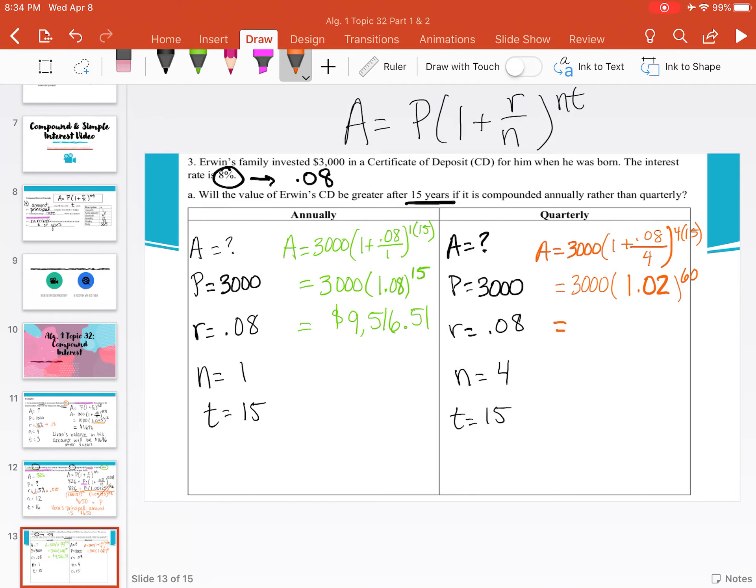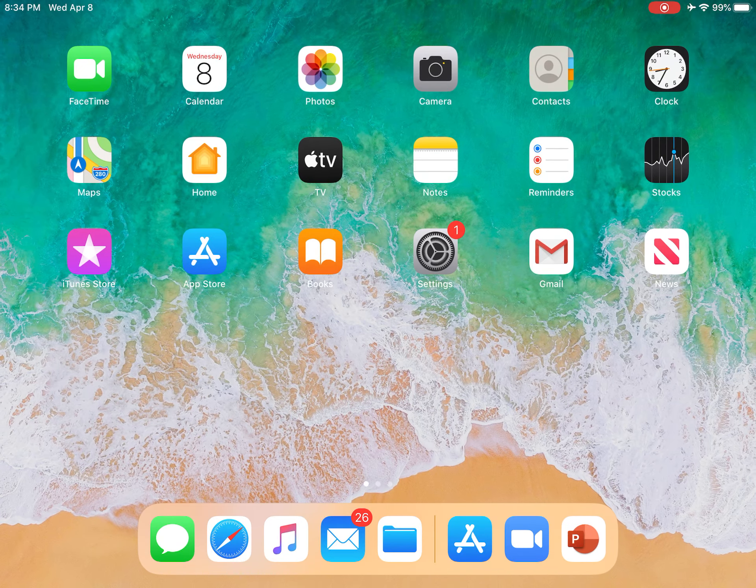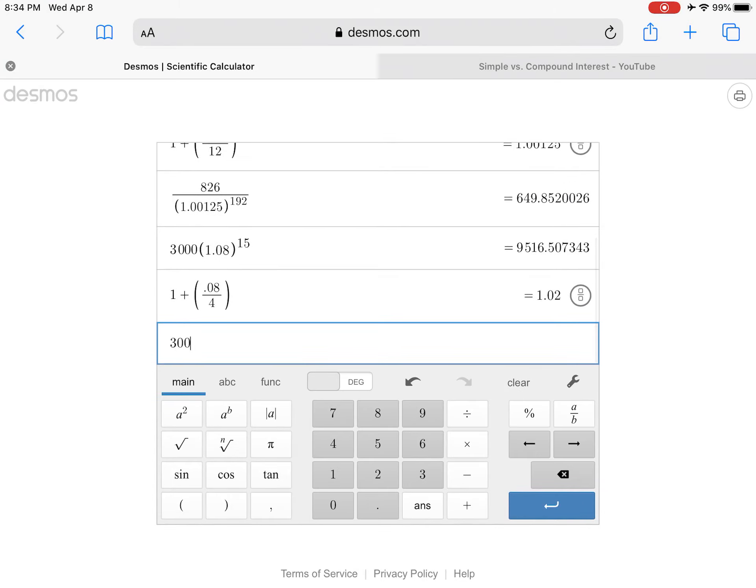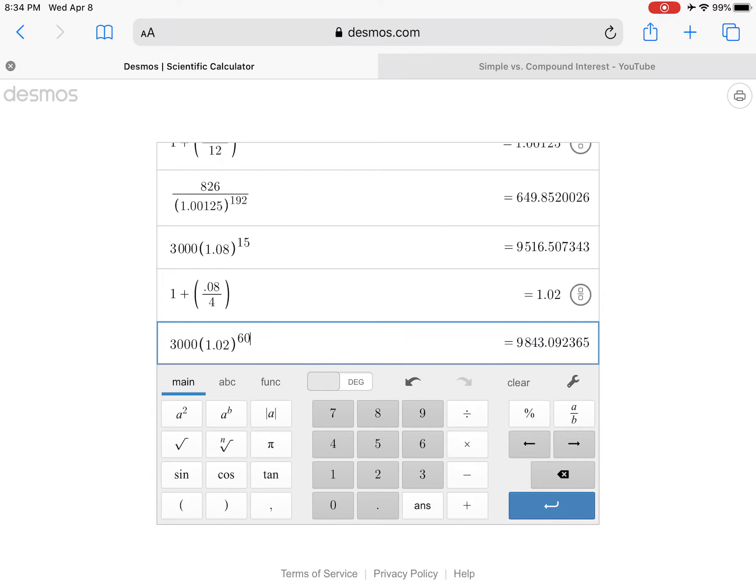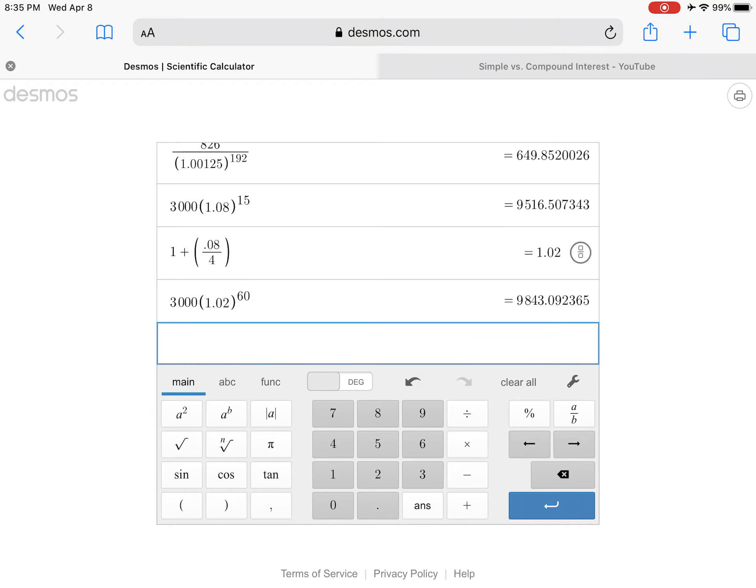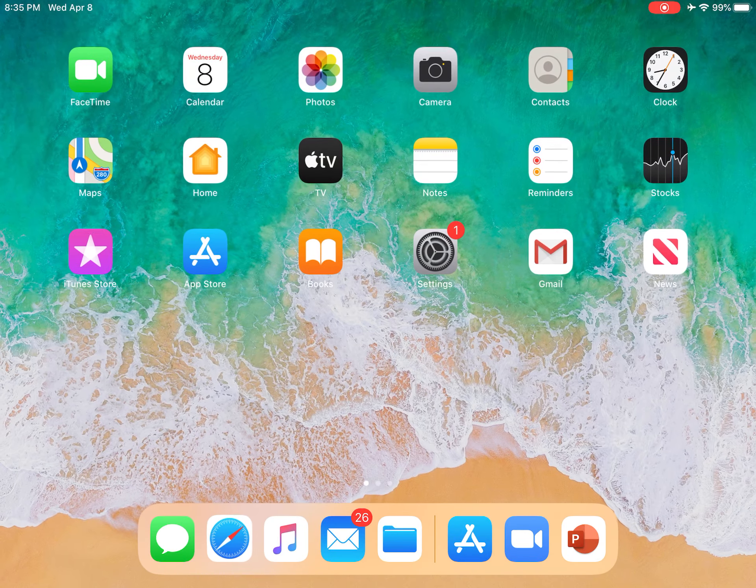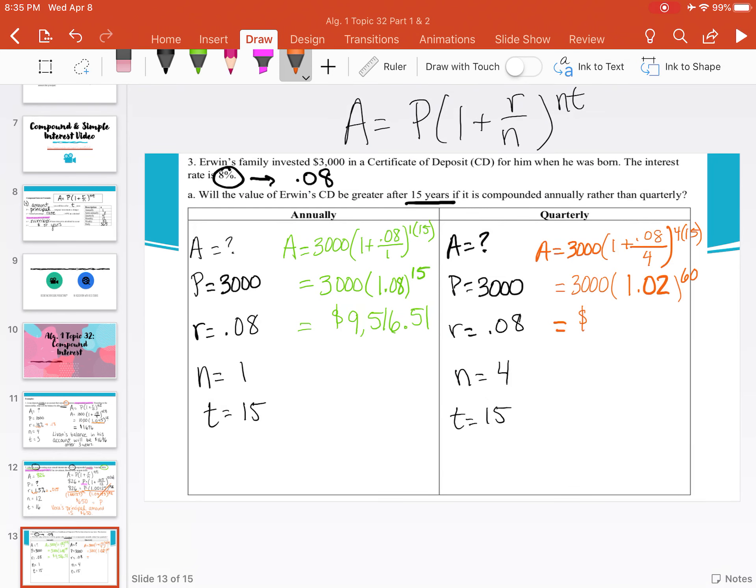Now we can go back to Desmos and plug this exponential growth function in. We have 3000 times 1.02 to the 60th power. And we have $9,843.09. So now we can compare these two values. Notice on the left hand side, we have $9,516.51. Whereas on the right hand side, we have $9,843.09.